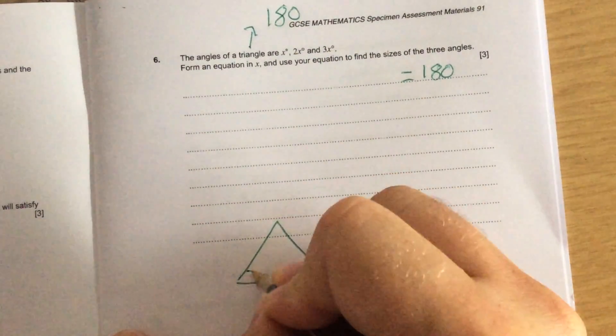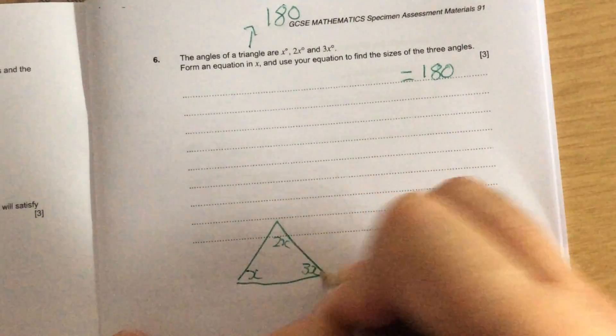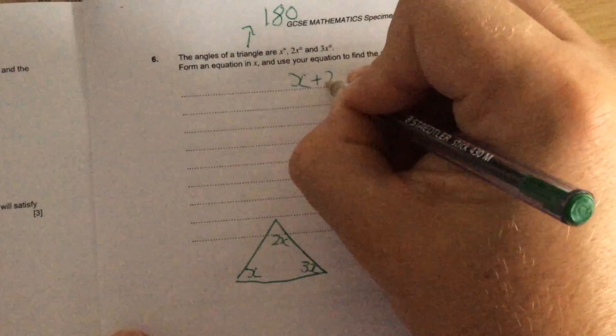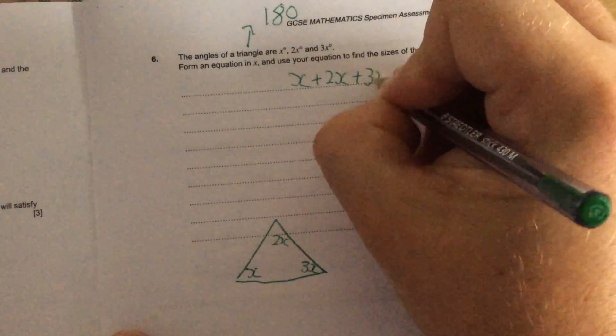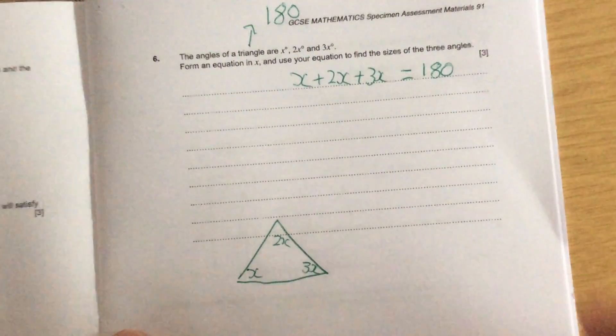So if I drew that triangle, I've got x, I've got 2x, and I've got 3x. So x add 2x add 3x together make 180.